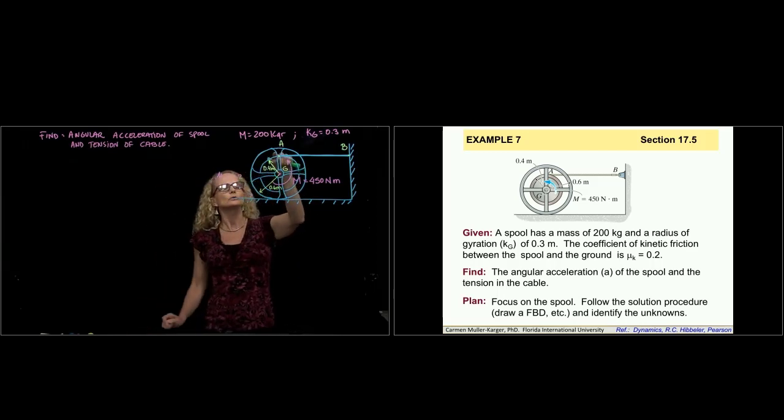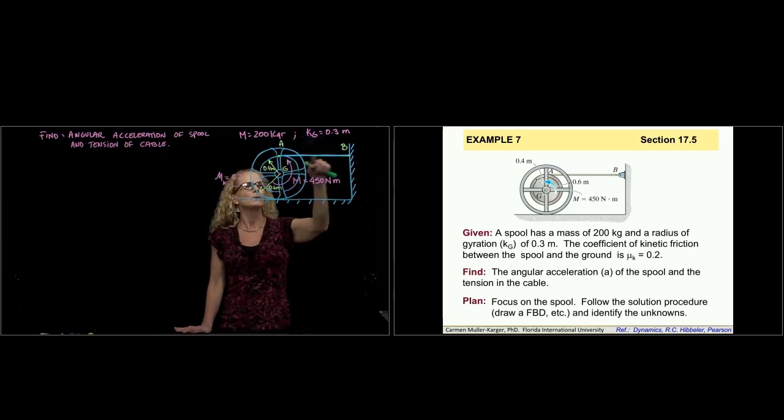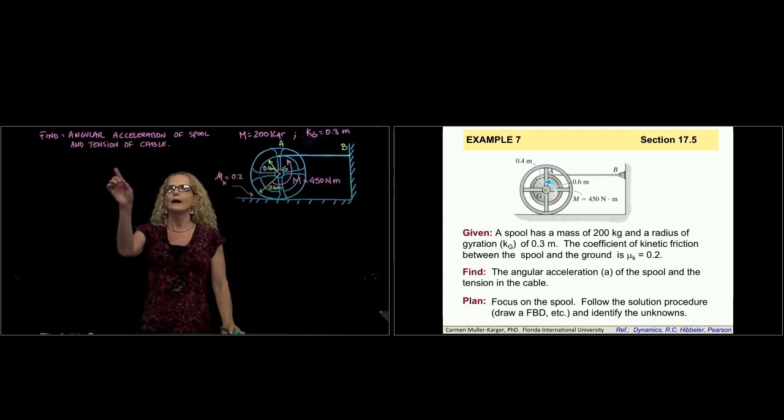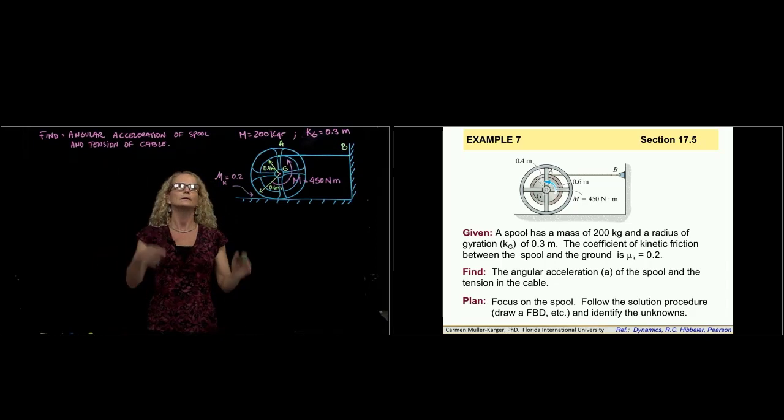The cylinder is attached to point A with a cable to the wall. So we are being asked to find the angular acceleration of the spool and the tension of the cable.